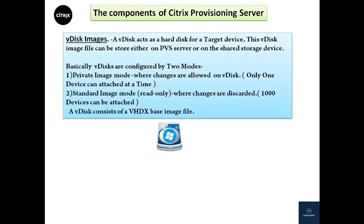The fifth component is vDisk images. A vDisk acts as a hard disk for a target device. vDisks are disk image files that reside on a provisioning server or on a shared storage device. vDisks are configured in two modes: Private Image Mode, where changes are allowed and only one device can be attached at a time; and Standard Image Mode, which is read-only, where up to 500 to 1000 devices can be attached and changes made by end users are discarded upon shutdown.